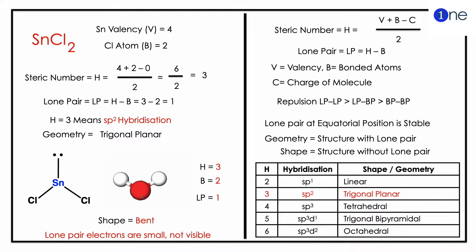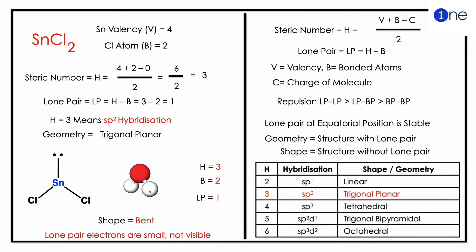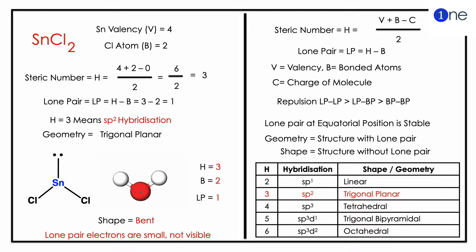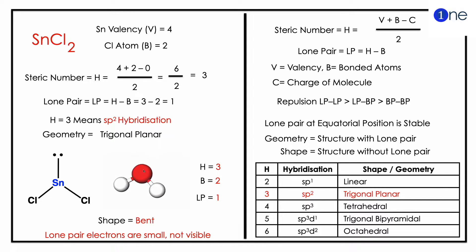That gives us three, which means sp2 hybridization and a trigonal planar base structure. The number of lone pairs can be calculated from H minus B: H is three and bonded atoms is two, giving one lone pair. So with two bond pairs and one lone pair in the trigonal structure, the actual shape of tin dichloride is a bent structure.